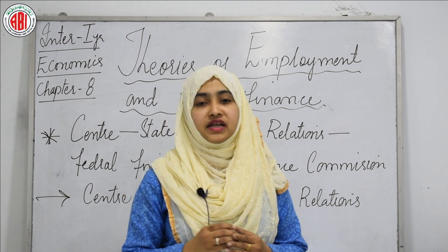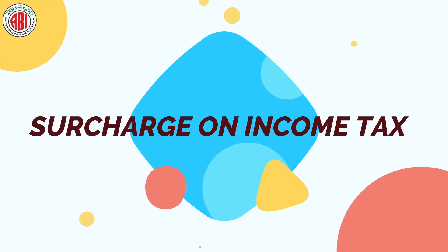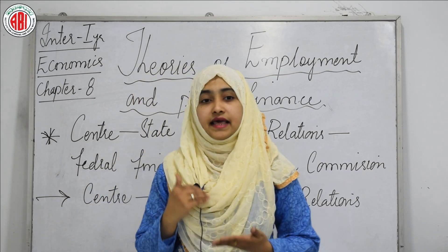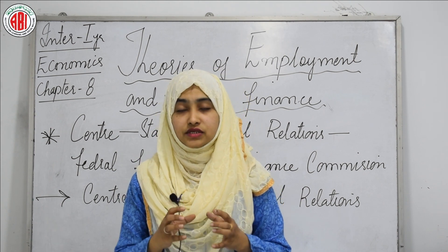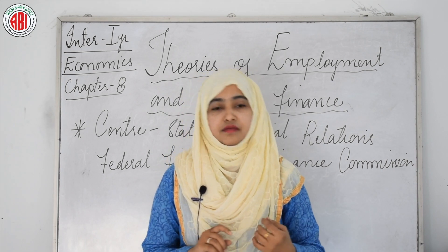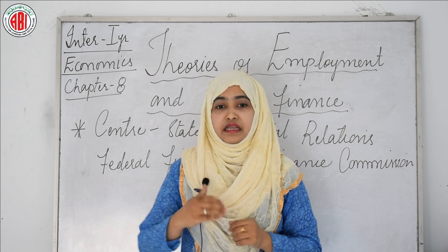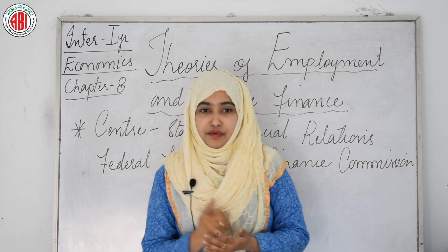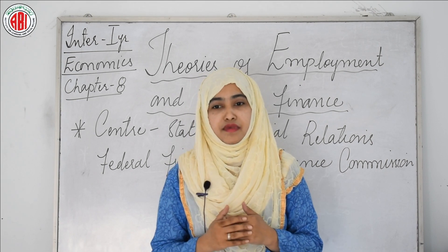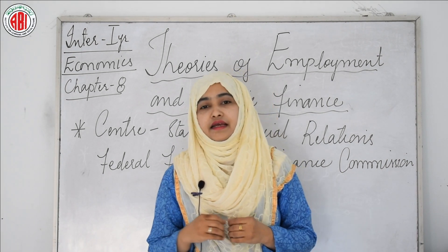The exclusive powers of the union government include customs duty, corporation taxes, capital gains, surcharge on income tax, and railway fees. The exclusive powers of state governments include land revenue, stamp duty, estate duty, water tax, sales tax, and tax on vehicles and luxuries, provided to village panchayats and municipalities. Under Article 360, during a proclamation of financial emergency, the president can give financial directives to the states. The union government supplements financial resources to states by advancing central loans and granting aids to the states.